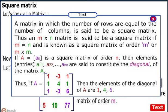If A = [aij] is a square matrix of order n, then elements (entries) a11, a22, ..., ann are said to constitute the diagonal of the matrix A.